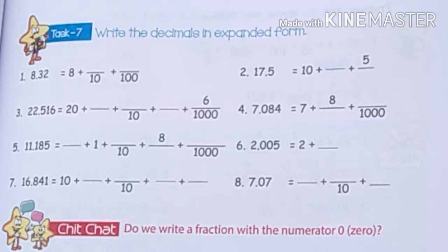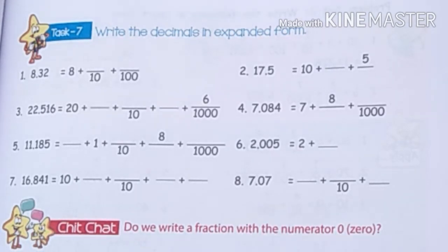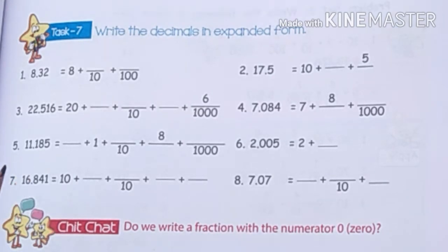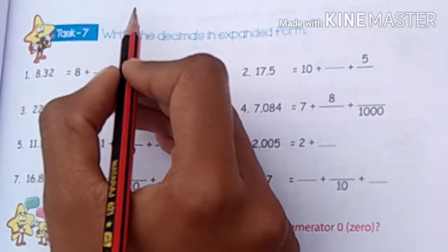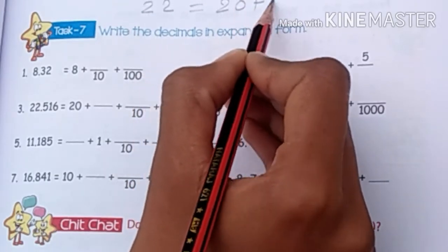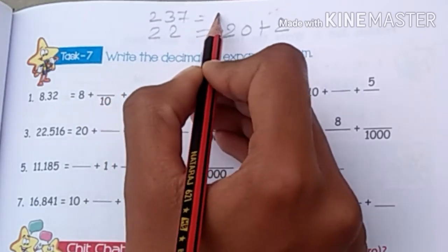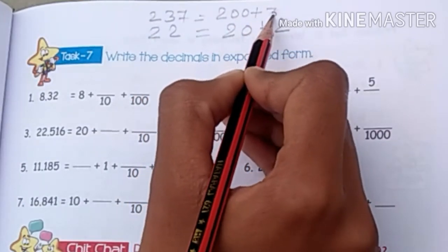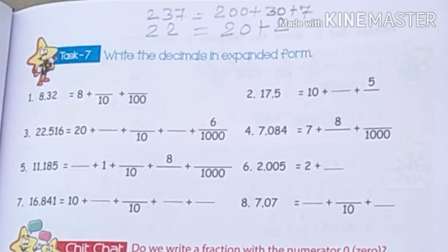In this video, we will learn how to expand the decimal. The expanded form is a simple concept you have read in the previous class. For example, if you have 22, you write 20 plus 2. If you have 237, you write 200 plus 30 plus 7. This is the expanded form for whole numbers. Today we will learn how to write a decimal in expanded form.